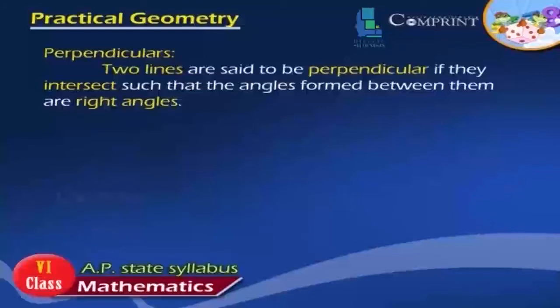Perpendiculars: Two lines are said to be perpendicular if they intersect such that the angles formed between them are right angles.